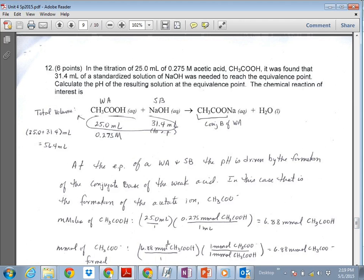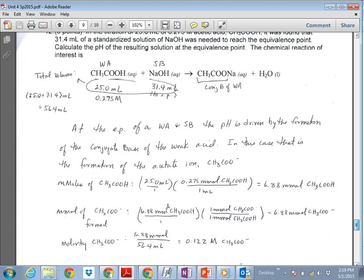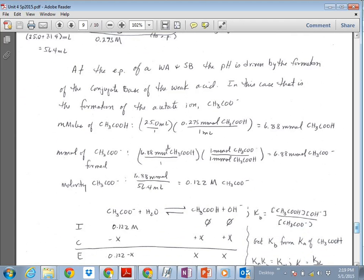So the information was given at the equivalence point. So at the equivalence point, basically, you have used up all of your acetic acid and sodium hydroxide. The thing that's driving the pH of the solution at the equivalence point must just be the presence of this acetate ion. So in order to get to the pH of this, we ultimately need to come up with the molar concentration of the acetate ion. So that's kind of what all this blah, blah, blah says. So the millimoles of acetic acid, you end up with 6.88 millimoles of acetic acid from the volume and molarity. So that must also be the millimoles of acetate formed because they react on a one-to-one basis.